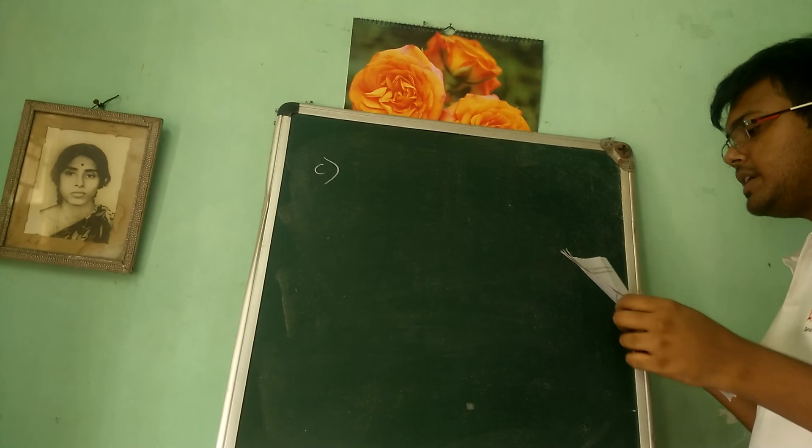Coming to the next question, question number 1 part c, we get the probability sum. The probability sum was very very easy this time. Looking at the paper I can say that the paper this time was very easy overall, though a few sums were tricky as expected for an ICSE exam. In part c we get to know that cards...